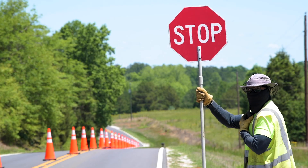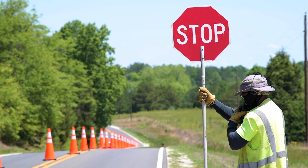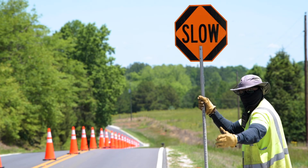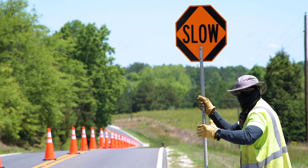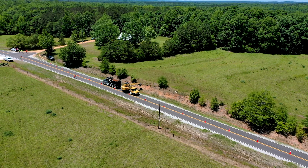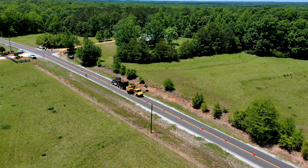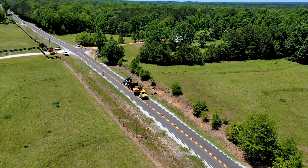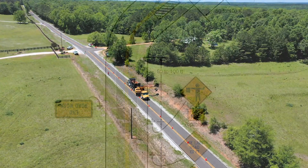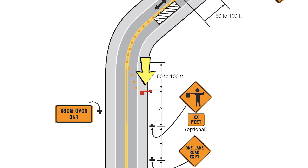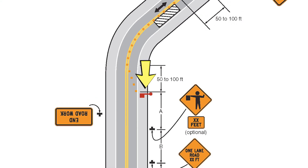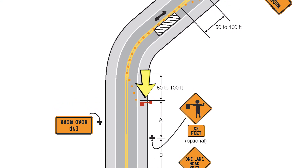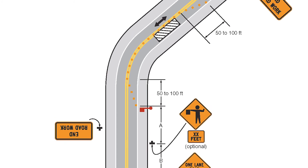The flagger is located at the end of the advance warning area. Flaggers are always one of the most vulnerable positions. Providing adequate sight distance for the flagger and a queue of stopped vehicles is very important. If the road work has a curve, like this layout, position the flagger in advance of the curve. Everyone — flaggers and road users — need adequate visibility.